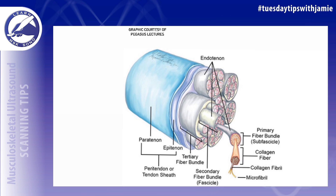The extracellular matrix is the weakest part of the tendon. It is the first to fail when there is increased pressure upon it. When the tertiary bundles are spared from tearing, they are still intact and there will be no weakening of the tendon or loss of function.